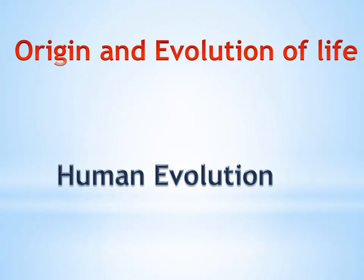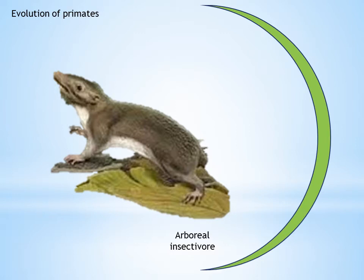Today we are going to discuss the concept of human evolution, which is part of the origin and evolution of life. It is interesting to learn how modern man evolved during his evolutionary history. Most people, and even scientists like Thomas Huxley and Charles Darwin, considered that humans evolved from monkeys, but this is not true. Fossil records indicate that apes, man, and monkeys have a common ancestry.